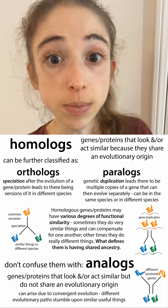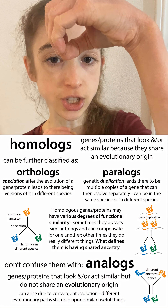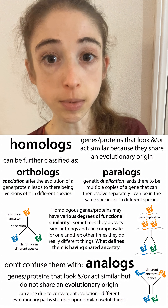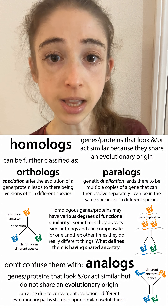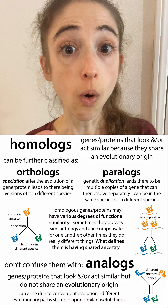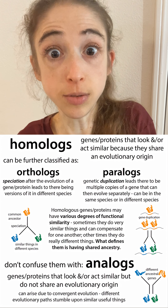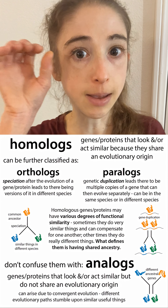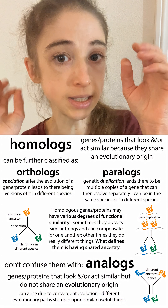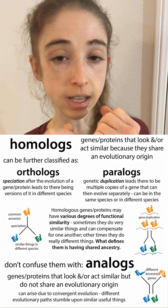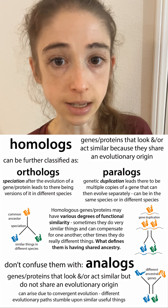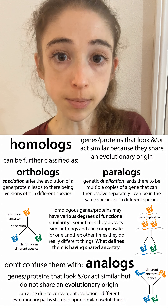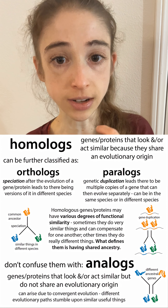Proteins could share a common genetic origin and diverge only a little, maintaining their similarities. Or they can be wildly different and still be homologous. Alternatively, they could have come from different sources and converged on a similar-looking and similar-acting protein. Either of those scenarios is possible, and you can't know from sequence similarity alone.